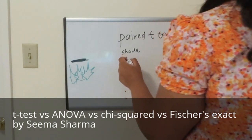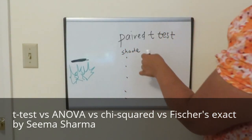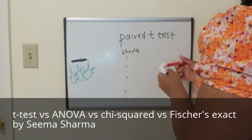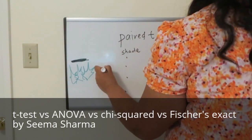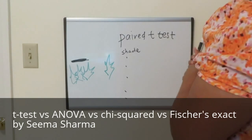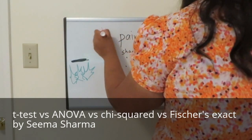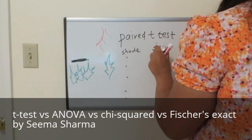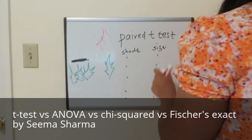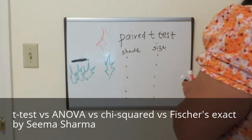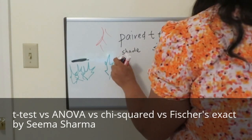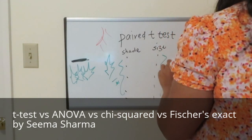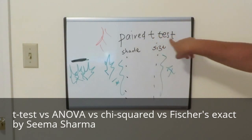For one leaf you have a bunch of measurements for size from when it was in the shade. Then for that same particular leaf, once you take it out into the sun, you start measuring the size of the leaf. Again you record a bunch of data points for the size over days or so. If you're comparing the means of these data points, you will perform a paired t-test on it.